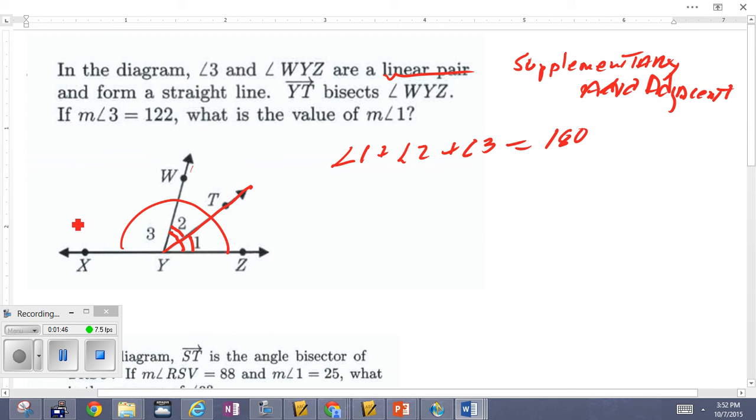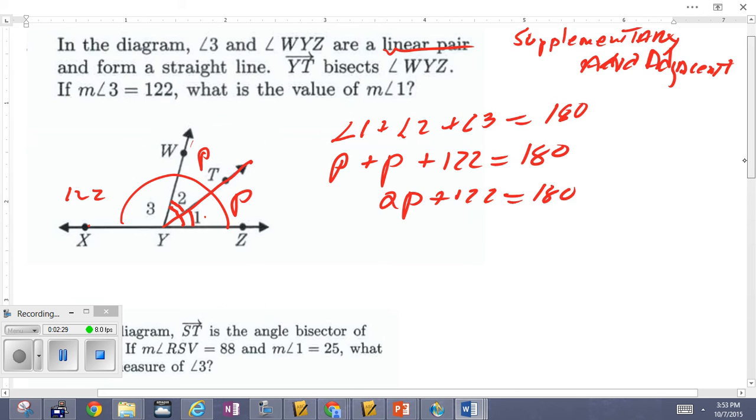So now it says angle 3 is 122. So I don't know what 1 is. If I don't know what it is, I'll call it a variable. I'm not going to use x because x was used as a point. I use P. And I also know number 2, which is the angle formed by the bisector, is also the same thing. So now I have everything. I can substitute it back into my equation. 1 and 2 are equal, both equal to P. So I'll just put P plus P plus angle 3, which is said to be 122, is equal to 180. So that's 2P plus 122 is equal to 180, and of course you should be able to solve that from there. I'm going to let you do that.